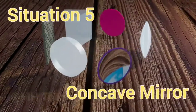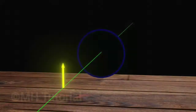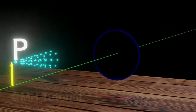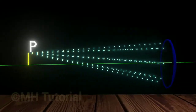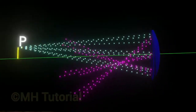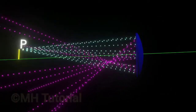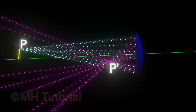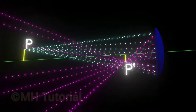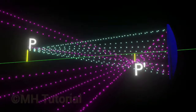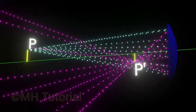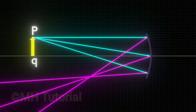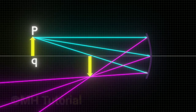Now check out image formation by a concave mirror. The rays of light emitted from point P are reflected back by the concave mirror. The reflected rays do not diverge here but converge into a point at P'. At that point an image of point P is formed, and an inverted image of the entire arrow is formed above point P'.